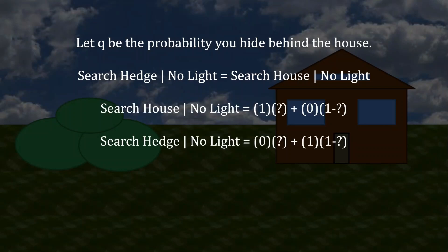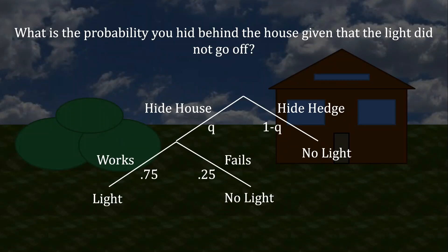This is a little bit more complicated than the previous set of calculations, because we're having to condition this on me not observing the light. So my payoff for any one of these strategies not only depends on what your probability is of choosing one option or the other, but also the probability that you're revealed under those circumstances. So to understand what the probability is that you hid behind the house, given that the light did not go off, it might help to diagram all this. If you're hiding behind the house with probability Q and hiding behind the hedge with probability 1-Q, there are two ways that we can have the light not turn on. Essentially, we're going to be ignoring the circumstance where you've hidden behind the house and the light worked, because we already know I'm going to be searching the house under that circumstance. So if we do not observe the light turning on, it could be the case that Q portion of the time the light failed 25% of the time, or it could just be that 1-Q portion of the time you simply hid behind the hedge.